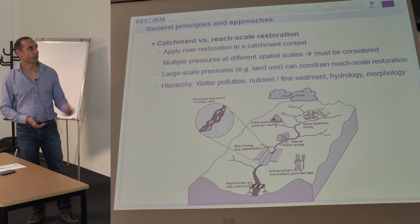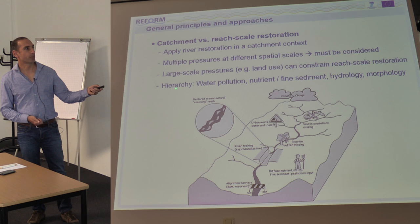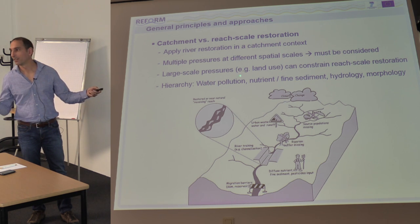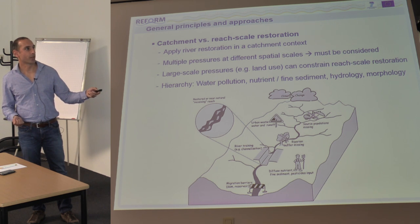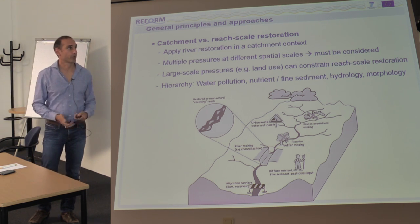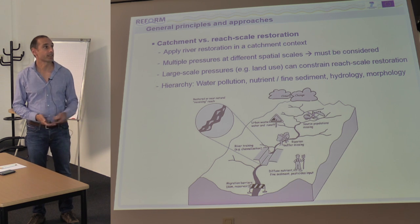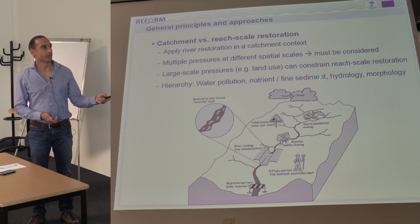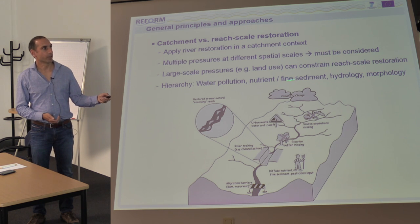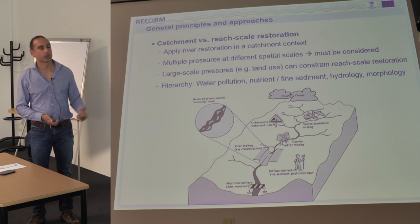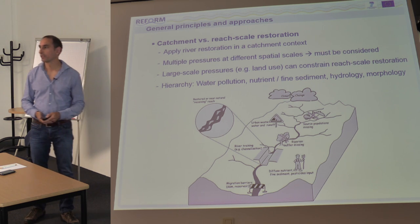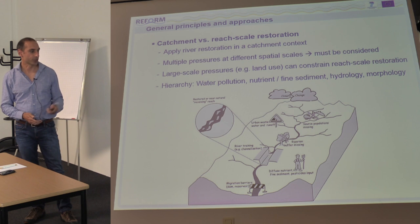You should address all these pressures, or at least be aware that if you don't, they will potentially constrain the effect of your local measures. There is a hierarchy: first, there must be water in the river with good quality; no large inputs of nutrients, fine sediment, or pesticides; and a rather natural hydrological regime. Once ensured, you can proceed to restoring habitats at the reach scale.